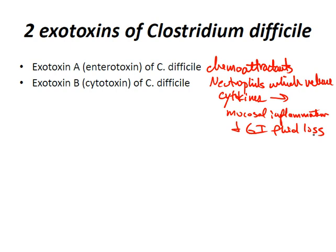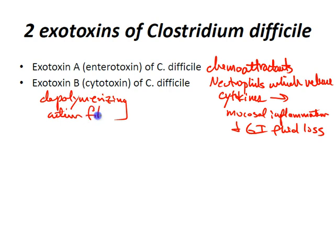We also have exotoxin B, which is a cytotoxin of Clostridium difficile. This disrupts the cytoskeleton by depolymerizing actin filaments. What happens is this leads to GI mucosal cell death, which leads to pseudomembranous colitis.